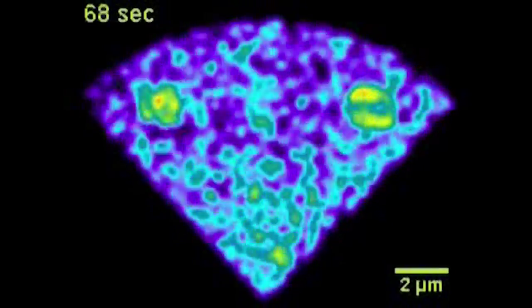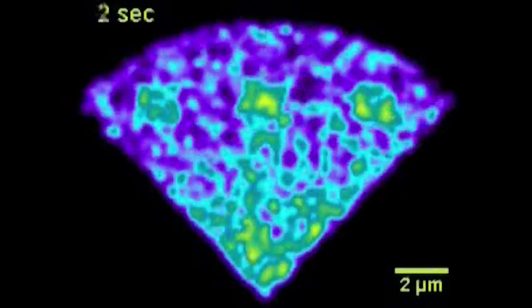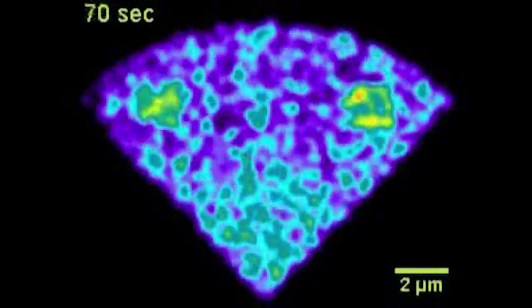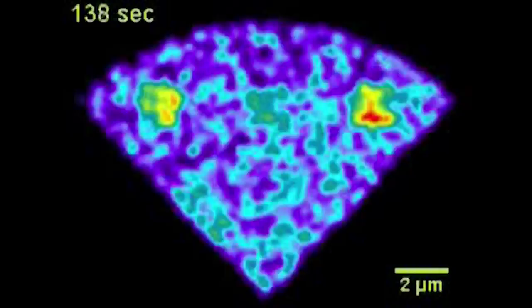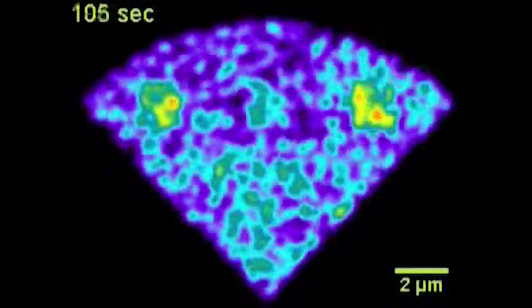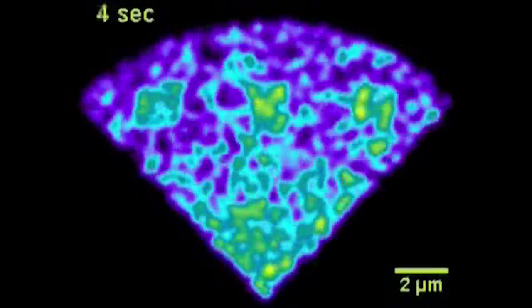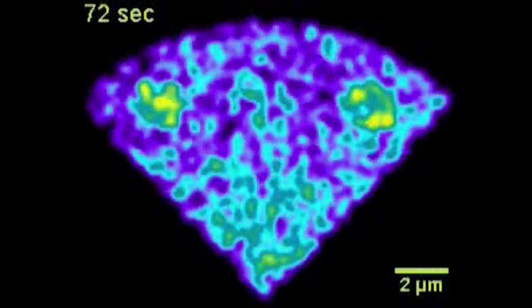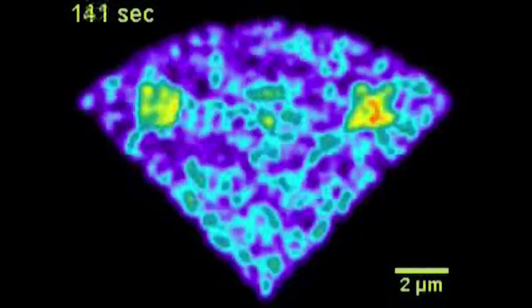Finally, we simulated FRAP experiments by producing stacks of images that resemble fluorescence distributions. Here is an example of a FRAP simulation of N-cadherin where the central pattern is photobleached and fluorescence gradually recovered. Note the strong analogy with the experiment, suggesting that our model parameters are correct.